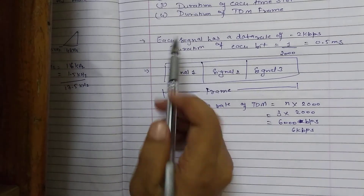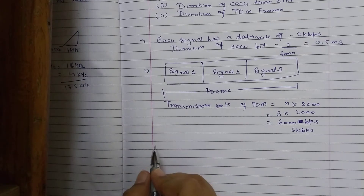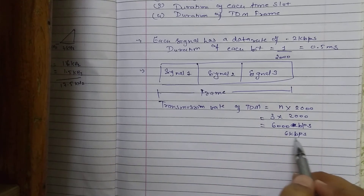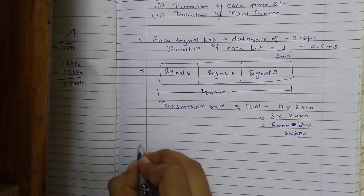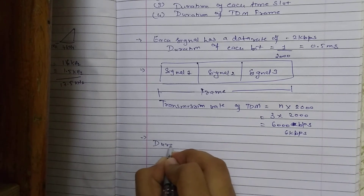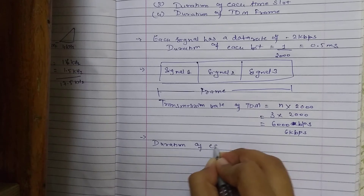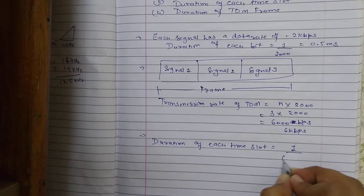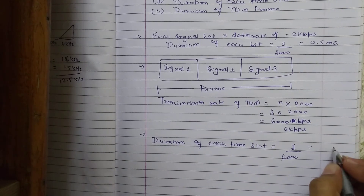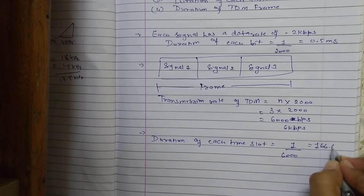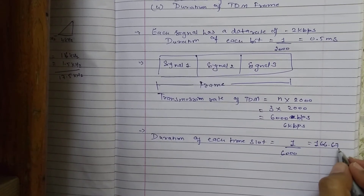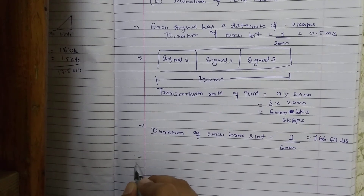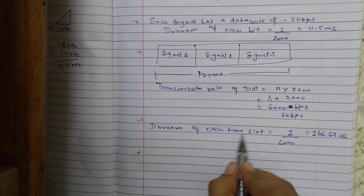The next thing we have been asked is the duration of each time slot. Since there are 6000 bits transmitting per second in total, the duration of each time slot is equal to 1 divided by 6000, which equals 166.67 microseconds.